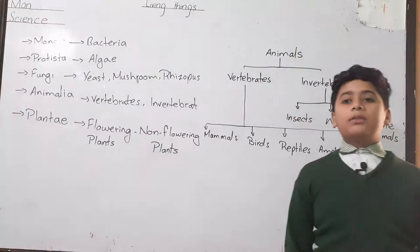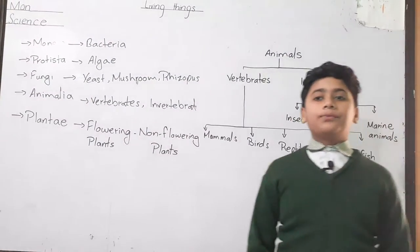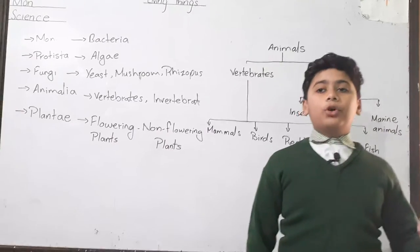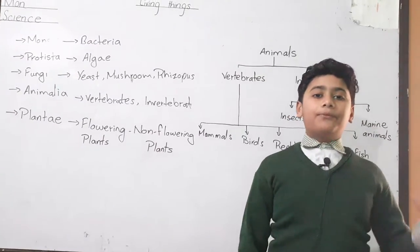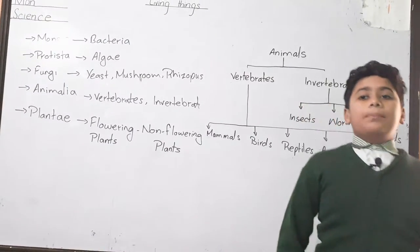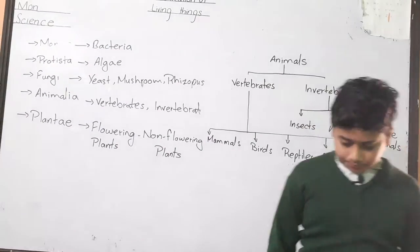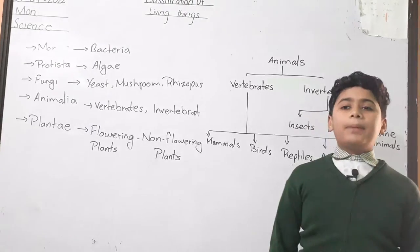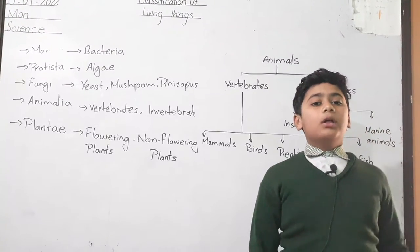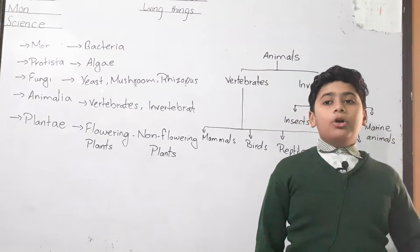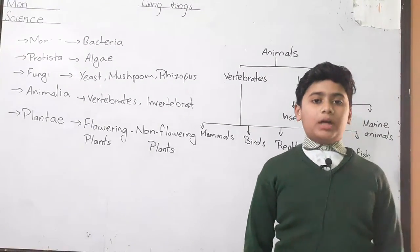Birds can fly. Birds can fly with the help of hollow bones, wings, and feathers. There are many types of birds. For example, Sparrow, Kite, and Eagle.